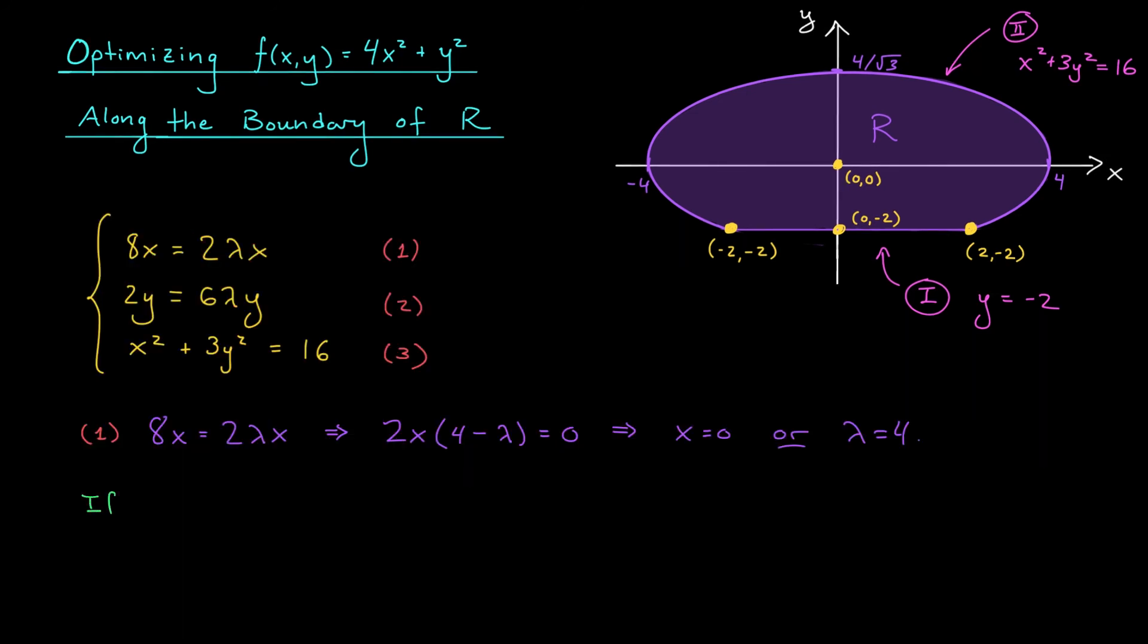First, if x is 0, can we find the corresponding values for y? Let's try using equation 3, which gives us a relationship between x and y. We get that 0 squared plus 3y squared equals 16, and hence y is plus or minus the square root of 16 over 3, which is plus or minus 4 over root 3. So the points (0, ±4/√3) are potential candidates for our max and min. However, since (0, -4/√3) isn't actually a point on this boundary component, we can discard it.